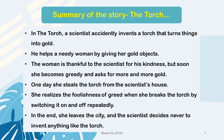In the summary of the story, the torch: a scientist accidentally invents a torch that turns things into gold. He helps a needy woman by giving her gold objects. The woman is thankful to the scientist for his kindness.